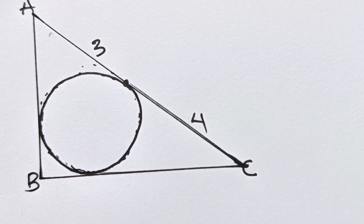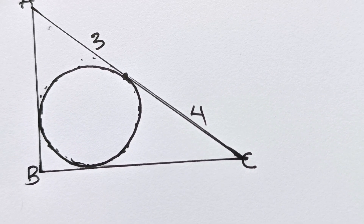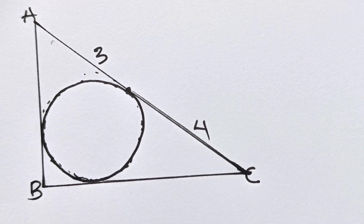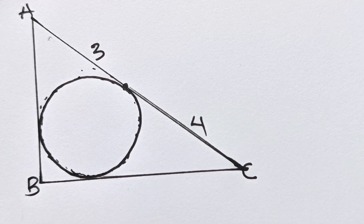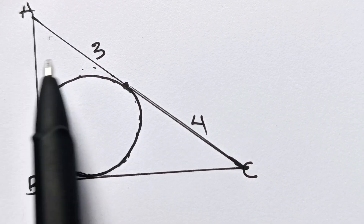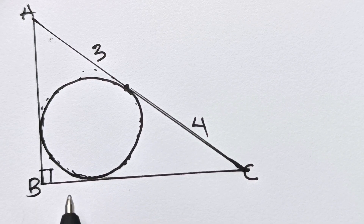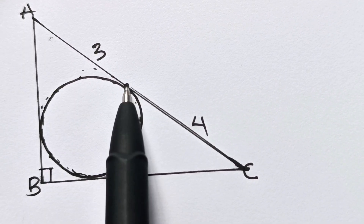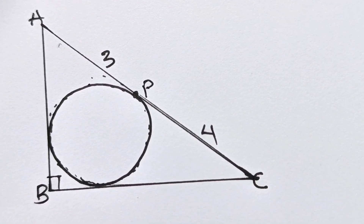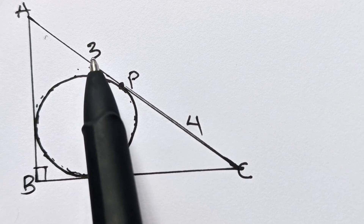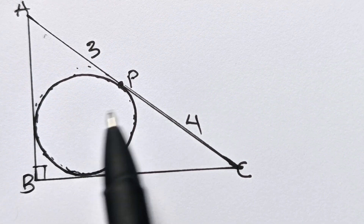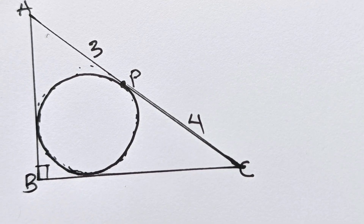Welcome back to my channel. I'm super excited to solve this trigonometry geometry question with you. Please note this is not drawn to scale. In this question, we are asked to find the value of the area of this triangle. This is a right-angled triangle. From A to point P is 3, and from P to C is 4.